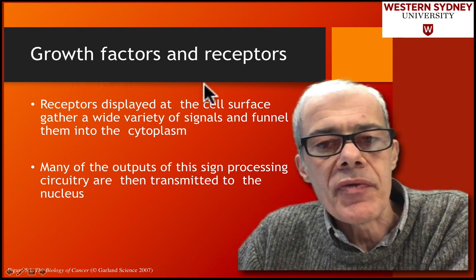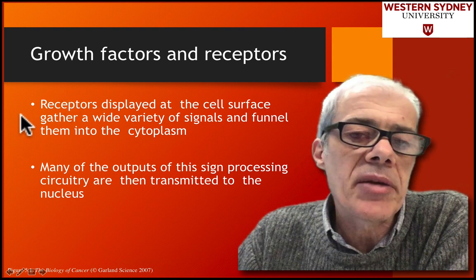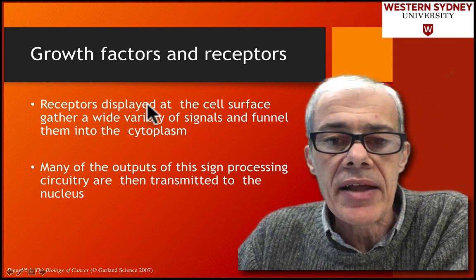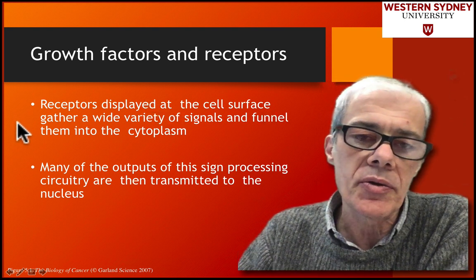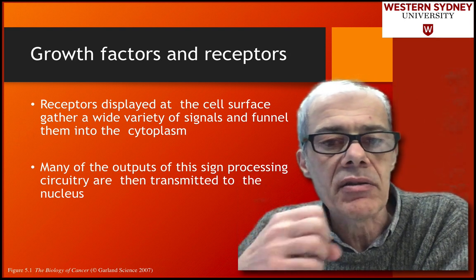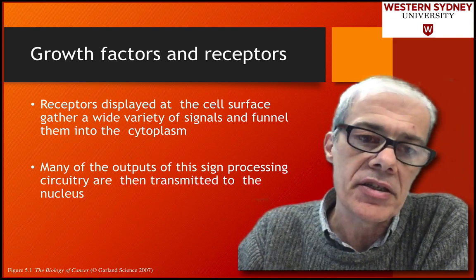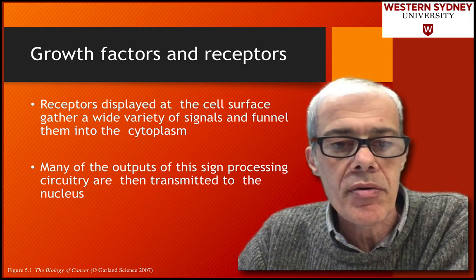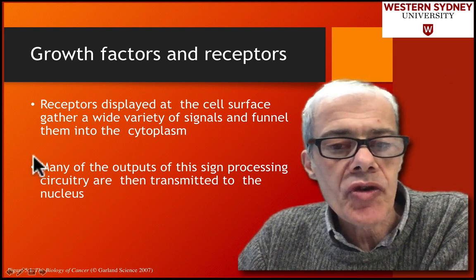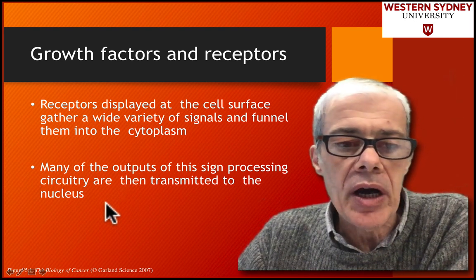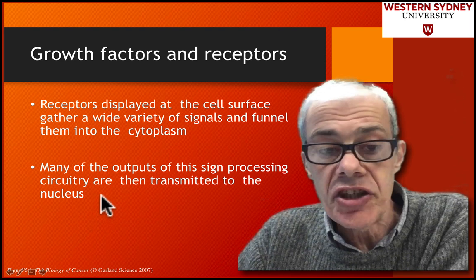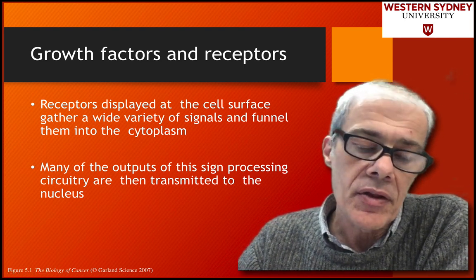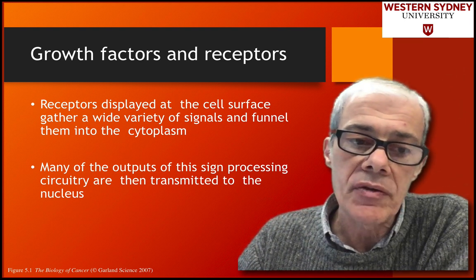Receptors are protein molecules located at the cell surface. On the plasma membrane, these molecules traverse the plasma membrane, detect a signal outside of the cell, and transduce it to a signal inside the cell, which triggers things in the cytoplasm and causes the cell to undergo a round of replicative growth. Triggering signaling in the cytoplasm can immediately activate proteins there, and it can also trigger the activation of gene expression in the nucleus.